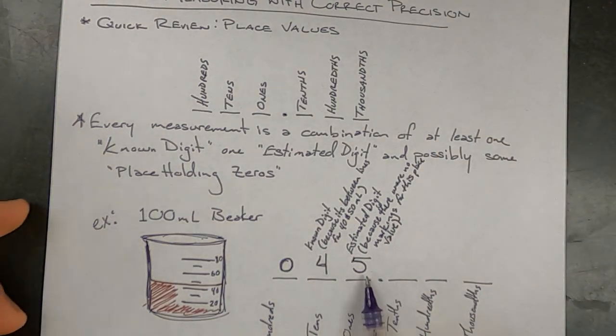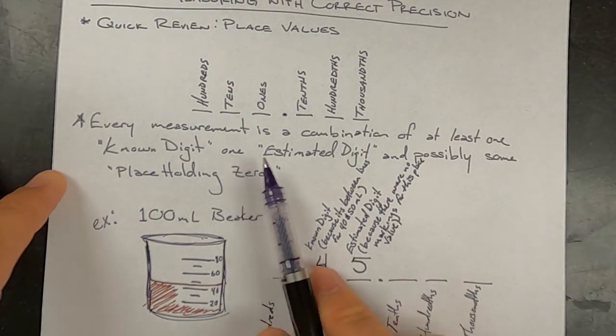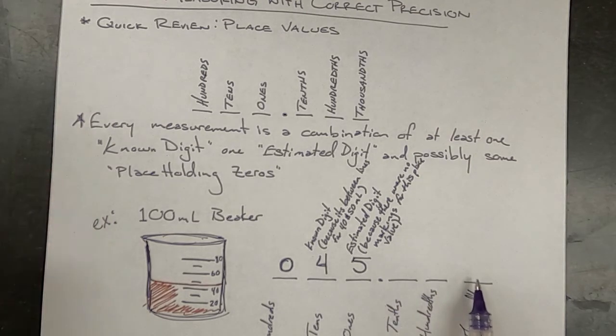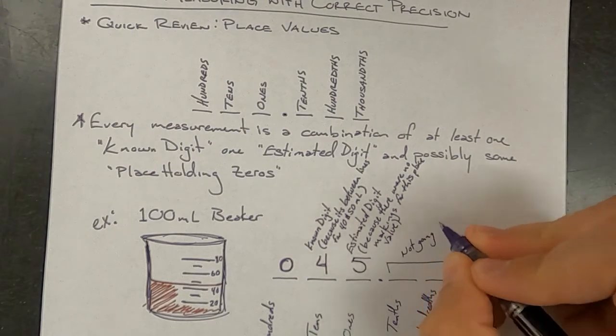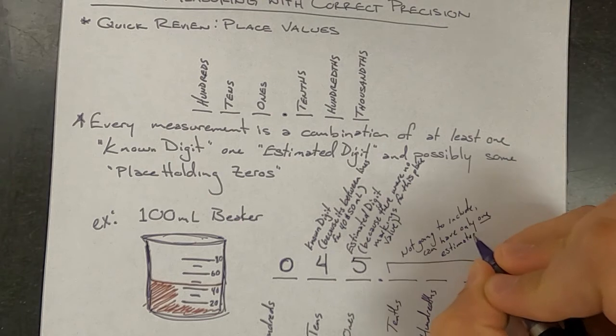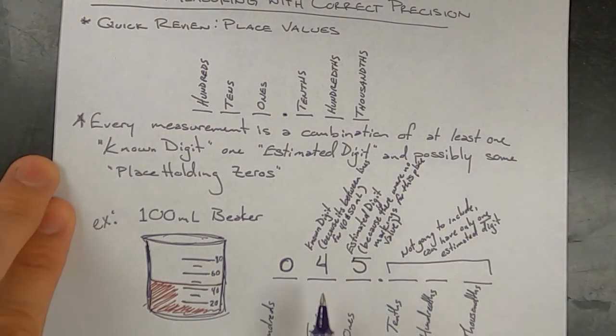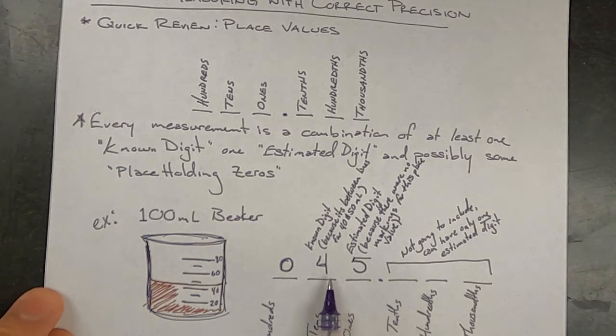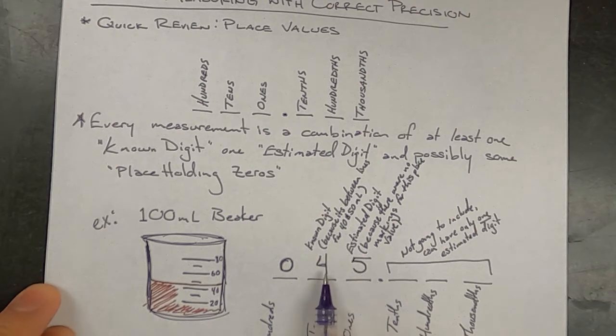Now again, in the statement above, we're only allowed to have one estimated digit. And so these would not even go into this reported out measurement. We wouldn't have anything in the tenths, hundredths or thousandths place. And so as long as you have a correct known digit and you have an estimated digit, then that would be a valid answer. So 43 milliliters, 45, 44, 46, 47. All of those would be valid and correct measurements for this.